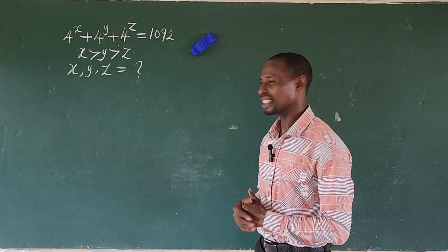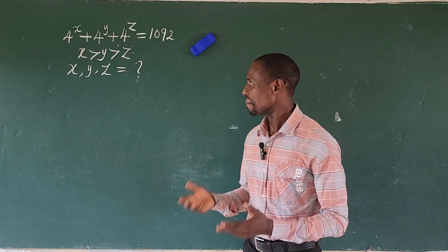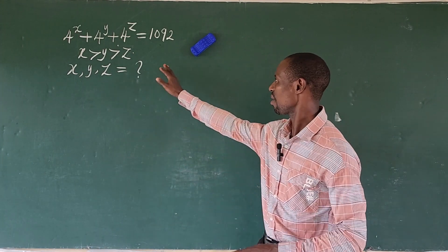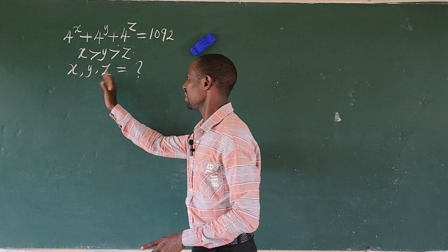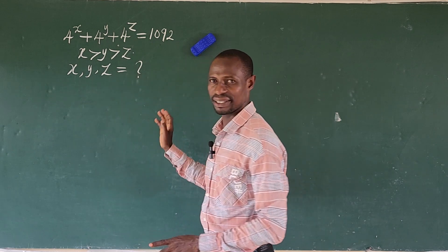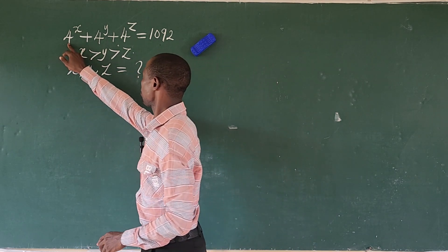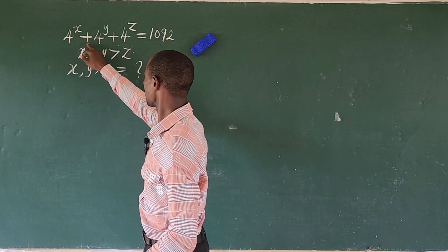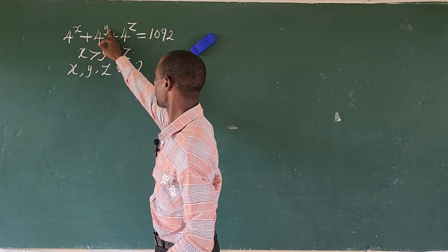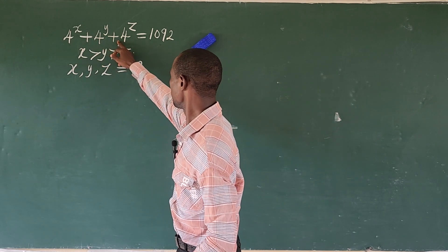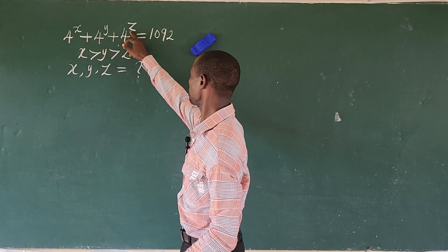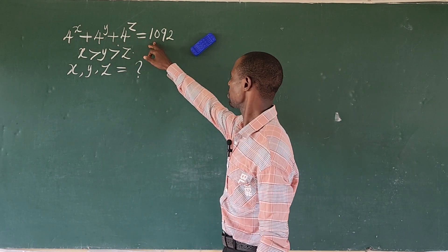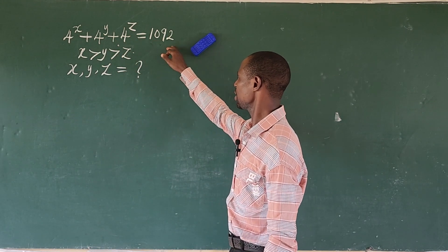Today we have another challenge, a math problem: how we solve for the value of x, y, z. From the question, 4 to the power of x plus 4 to the power of y plus 4 to the power of z equals 1092.